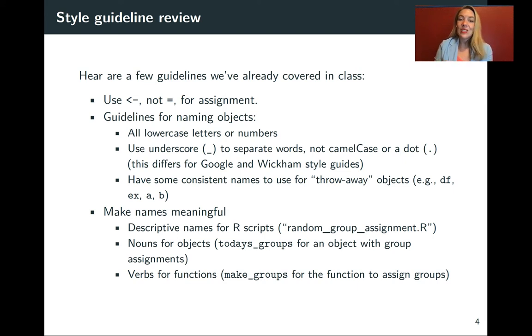Then to use an underscore to separate words rather than camel case or a dot and then also this is one that I think we've been trying to work towards in this class. You want to name your objects with names that make sense things you can come back to but every now and then you'll make an object that you just need for a minute to check something it might be kind of a throwaway object and I think it's helpful to have some consistent names for those so some of the ones I'll use is like df is a generic name for a data frame or x or a or b some people will use foo and bar.